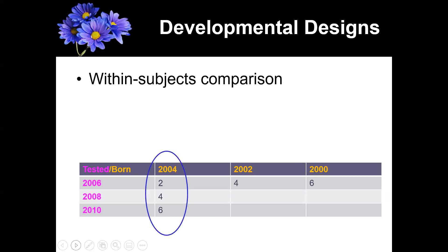A longitudinal design is the within-subjects version. It means you're going to compare the same people at multiple ages. So you might get a bunch of people born in 2004, wait till they're two and test them, wait two years and test them again, wait another two years and test them again. That would be analyzed like a within-subjects comparison, because it's the same people repeating the study at multiple ages.